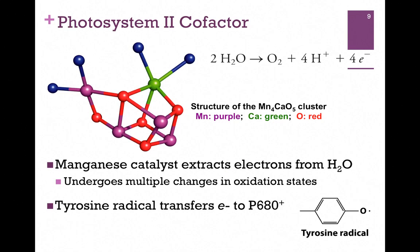What makes this oxidation of water possible? Remember from Chapter 15, oxygen has the highest reduction potential, so it's much more likely to take electrons than to give them up in the form of water. What makes this possible is that the oxygen-evolving complex of Photosystem II has a special cofactor — a manganese catalyst. As you can see, it contains both manganese, calcium, and oxygen. It goes through multiple oxidation state changes in order to pull electrons off water and produce oxygen. The electrons extracted from water through this manganese catalyst are passed to a tyrosine radical, and it's that radical that transfers the electron back to the reaction center that's been oxidized.